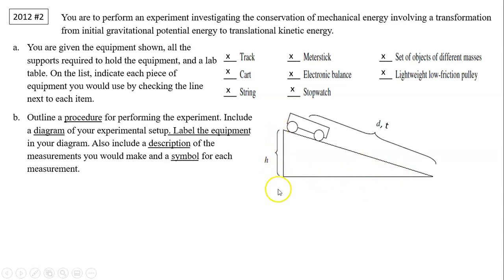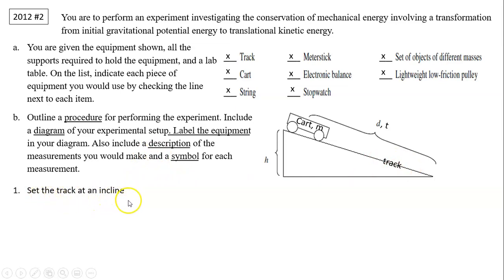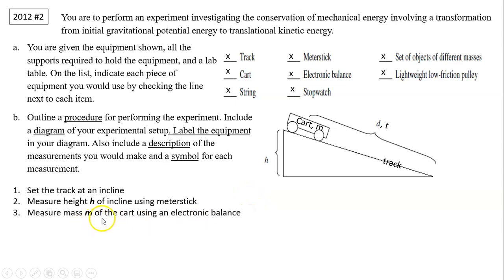You need to label the diagram. You need to measure the height h — that's the description — and the distance d of the track. You also need to measure the time t. There is a card with mass m; you need to measure the mass to find potential energy. The procedure is: first, set up the track on the incline, then measure the height h of the incline using the meter stick.